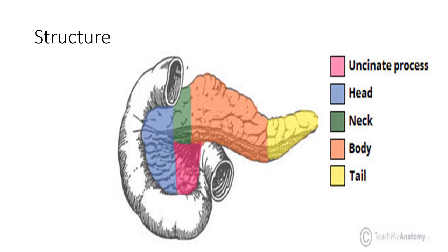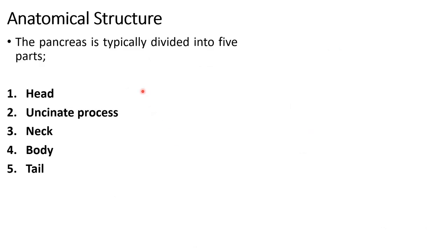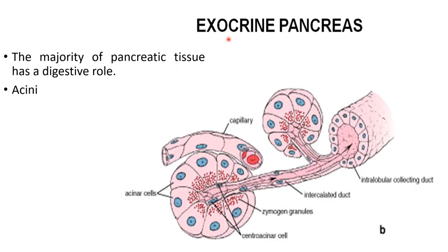This structure you have to draw in your answer sheet and explain under the headings: head, uncinate process, neck, body, and tail. After the description, mention about the exocrine pancreas, which performs the digestive role. Exocrine pancreas consists of acini. The acini consists of acinar cells, and near the center you can see zymogen granules. From the center of each acinus, there is an intercalated duct. Different intercalated ducts from different acini join to form intralobular collecting ducts. Each acinus is also supplied by capillaries.